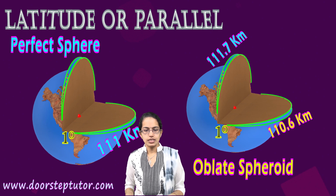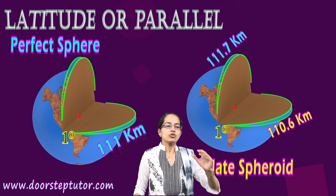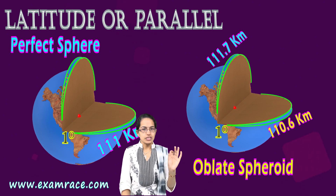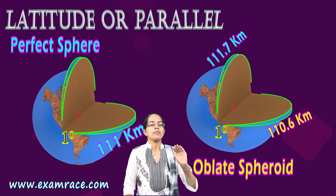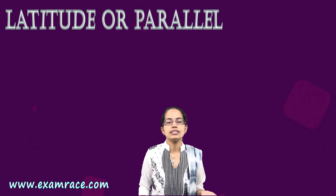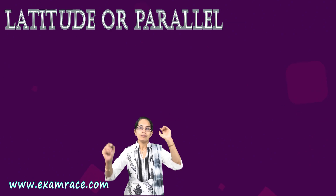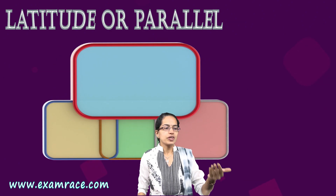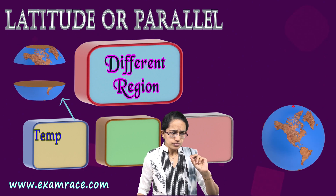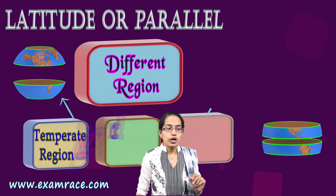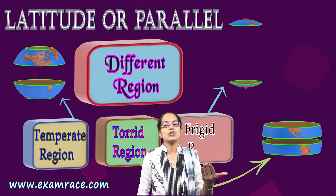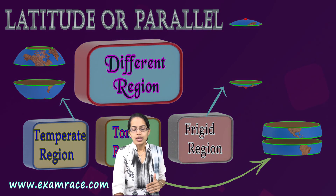Since the earth is not a perfect sphere, there is a minor variation in the length of latitudes. Drawing latitudes is a simple concept, and understanding them is important because we can use latitudes to differentiate regions into torrid, temperate, and frigid zones based on latitudinal extent.